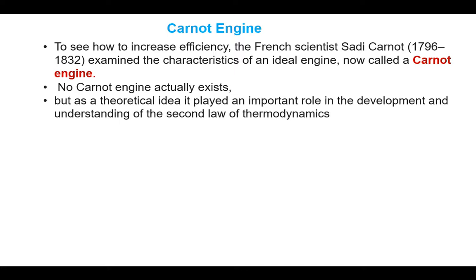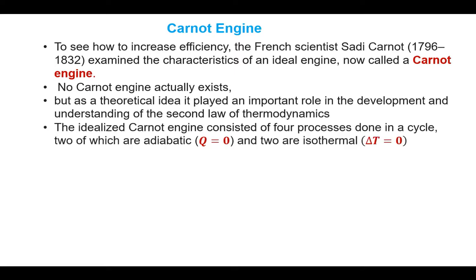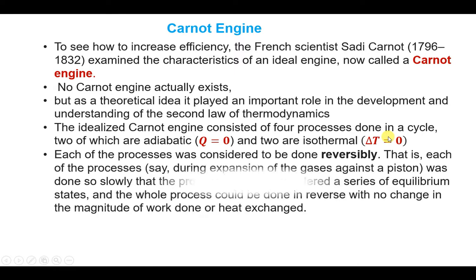The idealized Carnot engine consists of four processes done in a cycle: two which are adiabatic, meaning the heat energy equals zero, and the other two are isothermal, meaning the change in temperature in those two processes is equal to zero. Each of these processes was considered to be done reversibly.